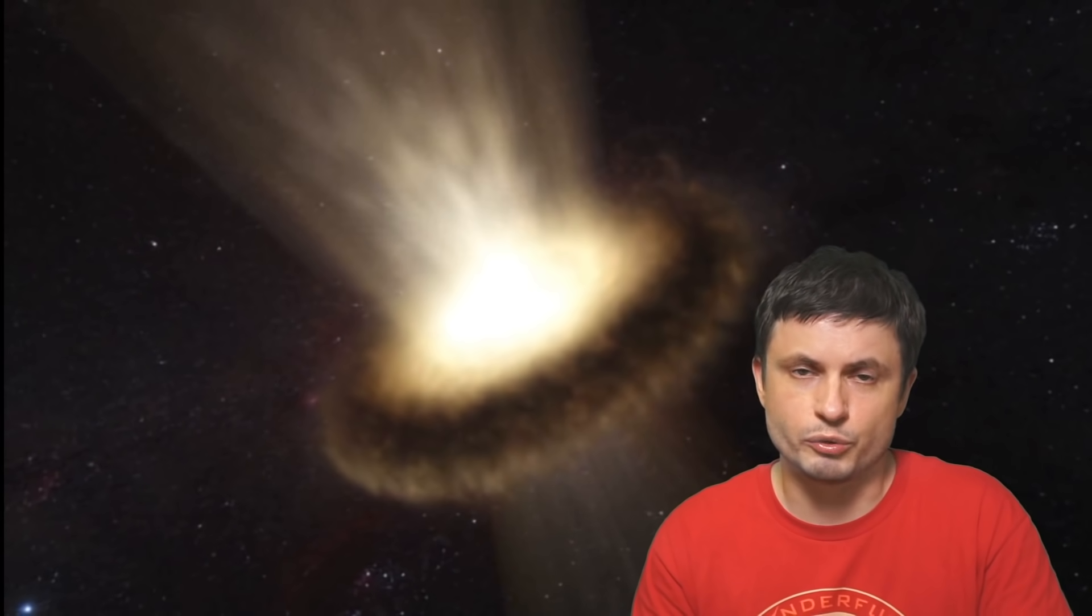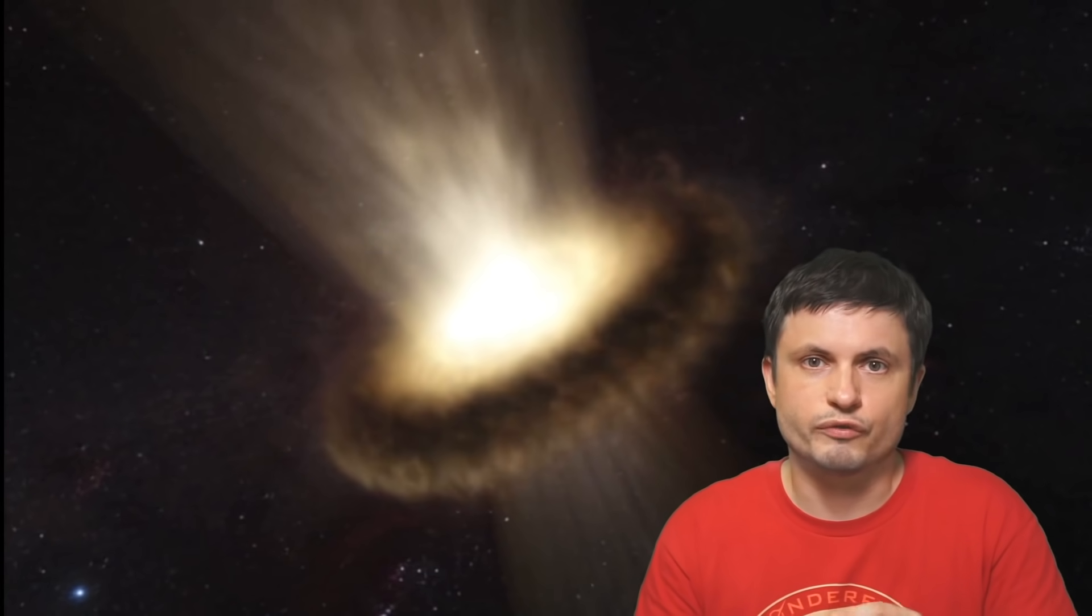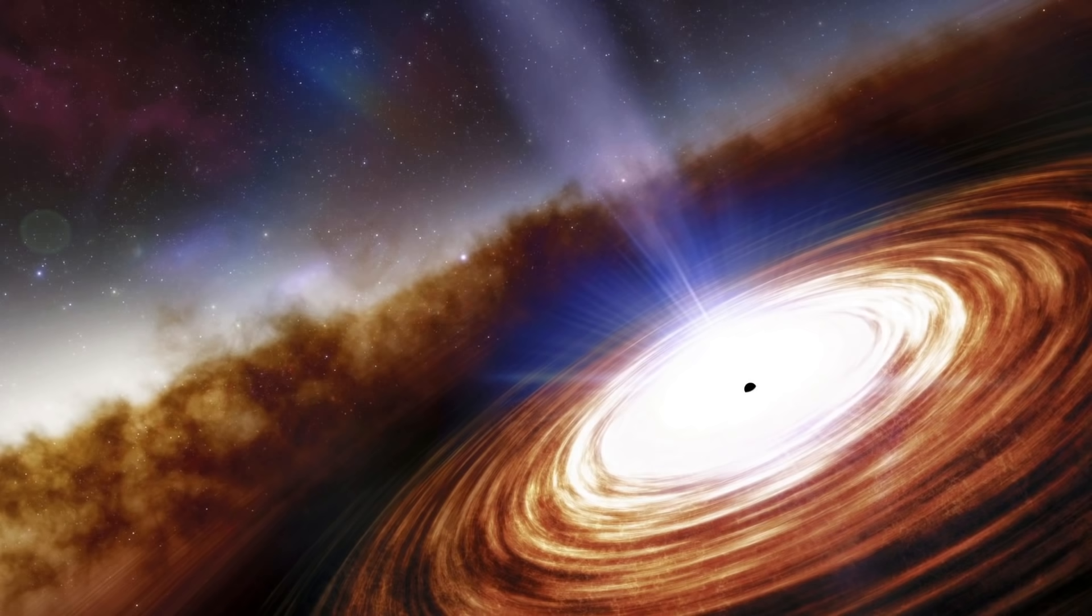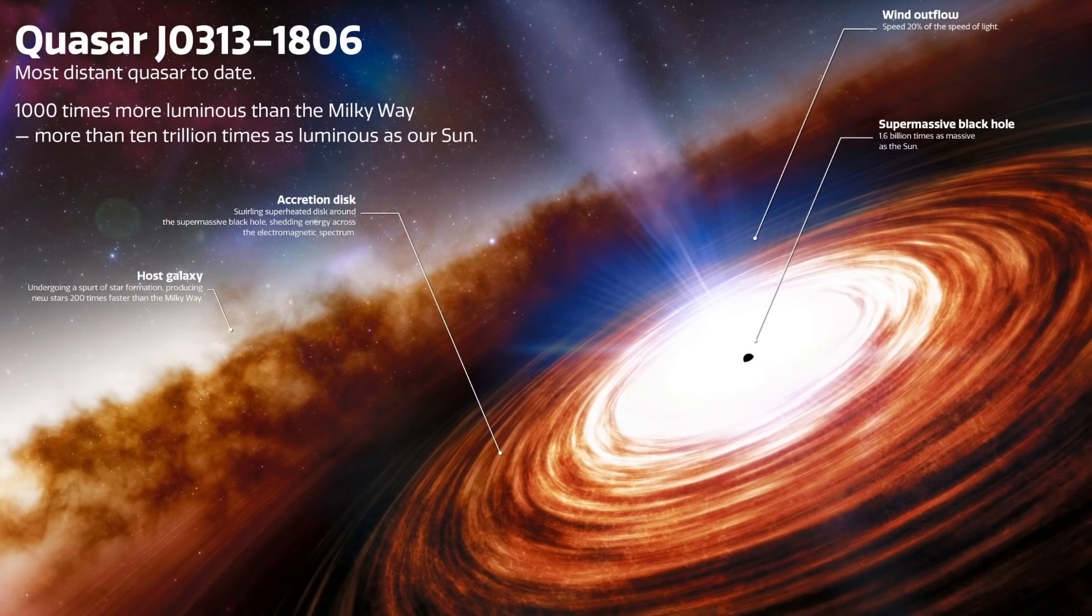But for a supermassive black hole such as the one in the center of the Milky Way, or for any massive black hole over 1 million masses of the Sun, they will usually start forming relatively similar structures. If simplified, it might look something like this. There's going to be an accretion disk or more like an accretion torus around it.